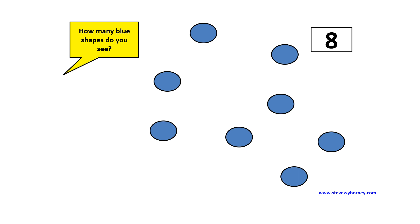There are eight blue shapes. How did you know there were eight? Did you count all eight shapes or did you see the dots in different groups like maybe four and four or a group of five and a group of three?